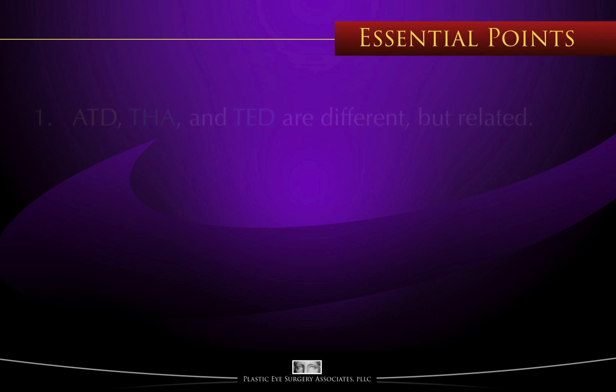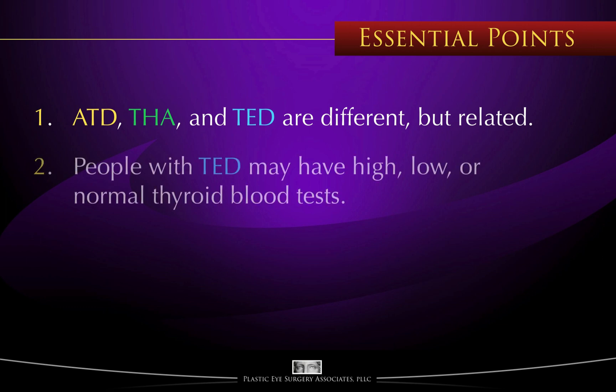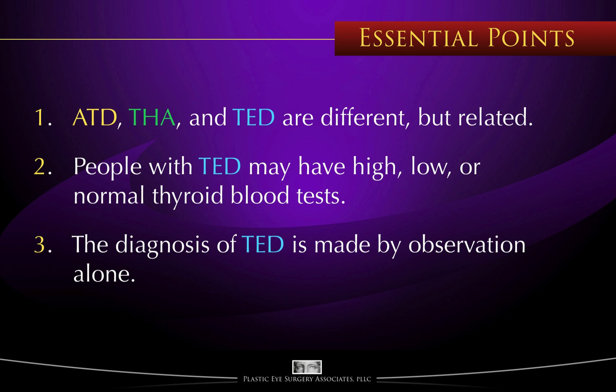The essential points of this video are: one, that ATD (autoimmune thyroid disorders), THA (thyroid hormone abnormality), and TED (thyroid eye disease) are different entities but related — try not to confuse them as many patients and physicians do. Two, people with thyroid eye disease may have high, low, or normal thyroid hormone blood tests, not only at the time of diagnosis, but throughout their entire lives. Three, the diagnosis of thyroid eye disease is made by clinical examination alone. Blood tests and imaging studies may help to confirm the diagnosis, but in the end, examination by an experienced examiner will always be most important.